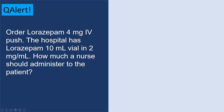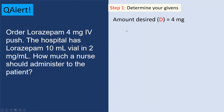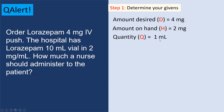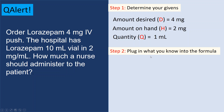Another example using the Desired over Have method: an order for lorazepam 4 milligrams IV push. The hospital has a 10 mL vial at 2 milligrams per mL concentration. Step one: determine givens — desired is 4 milligrams, on hand is 2 milligrams per mL, and quantity is 1 mL. Note: the quantity is 1 mL, not 10 mL — the vial holds 10 mL, but contains 2 milligrams per mL.